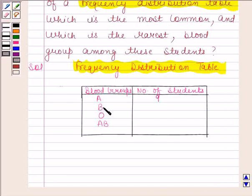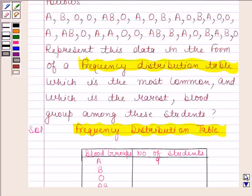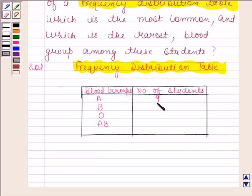Now we will calculate how many students have B blood group. So 1, 2, 3, 4, 5, 6. So now write 6.